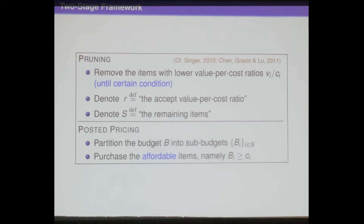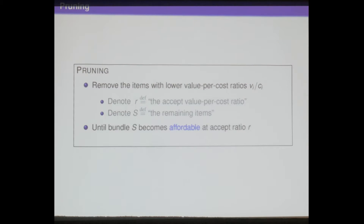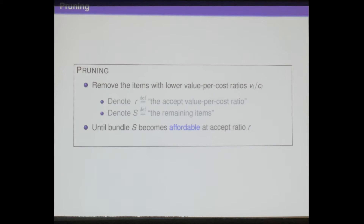Let me give more details about the pruning stage. We remove the items with lower value-per-cost ratios until certain conditions. Let's denote by S the remaining items and by r the accept value-per-cost ratio. A natural and intuitive stop condition is to stop once the remaining items become budget feasible at the current ratio.